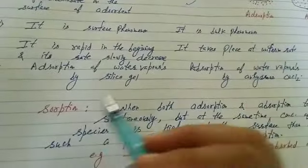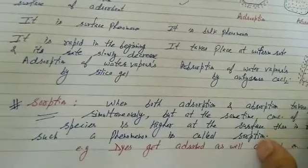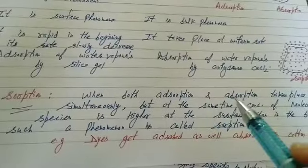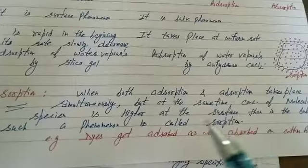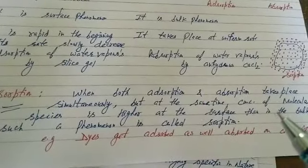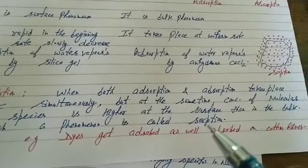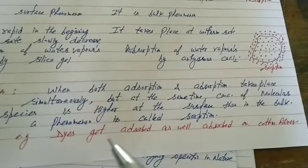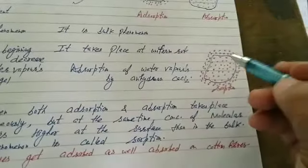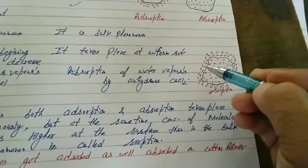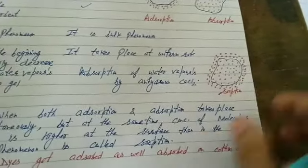Next is sorption. Sorption is a specific case when both adsorption and absorption take place simultaneously, but the concentration of molecular species is higher at the surface than in the bulk — meaning the rate of adsorption is more than absorption. This phenomenon is called sorption. Example: dyes which get adsorbed as well as absorbed on cotton fibers — on the surface it is adsorption and in the bulk it is absorption.